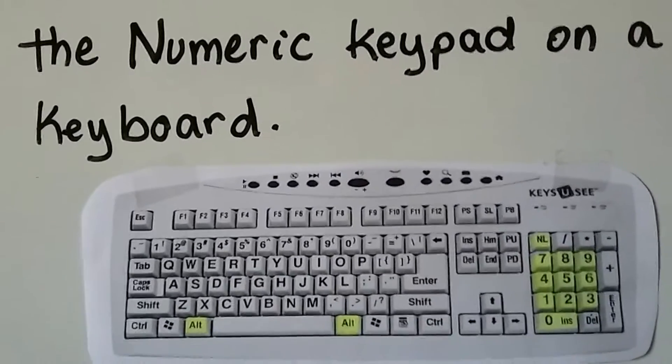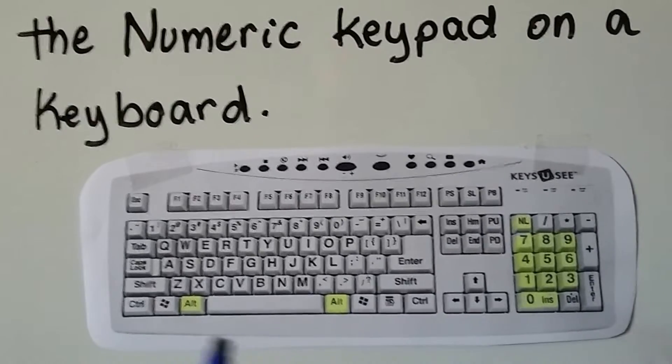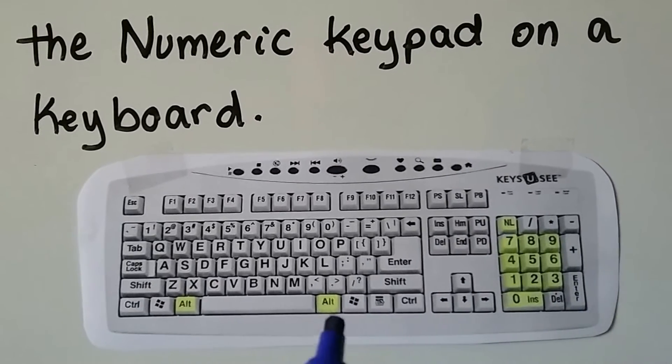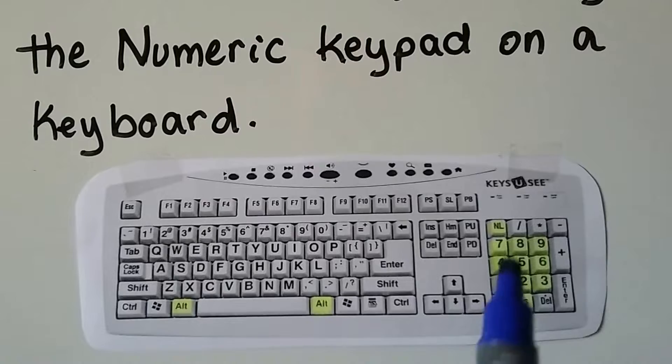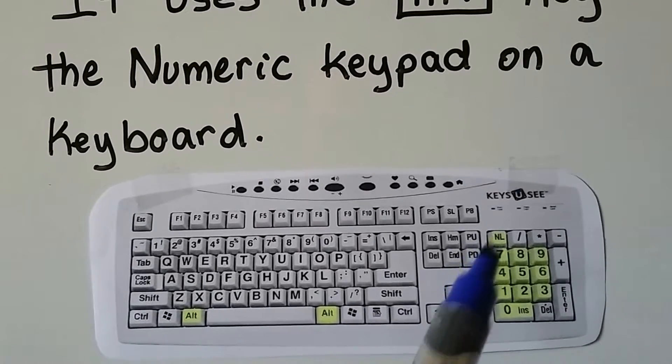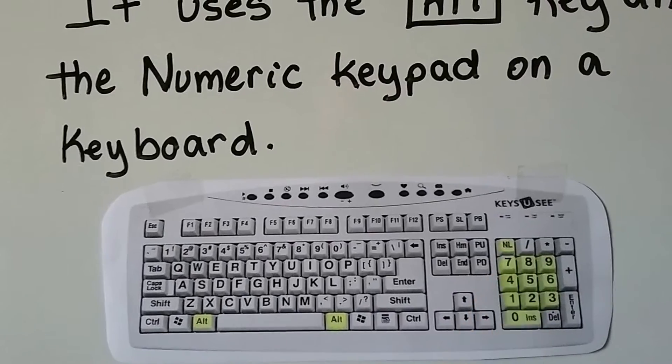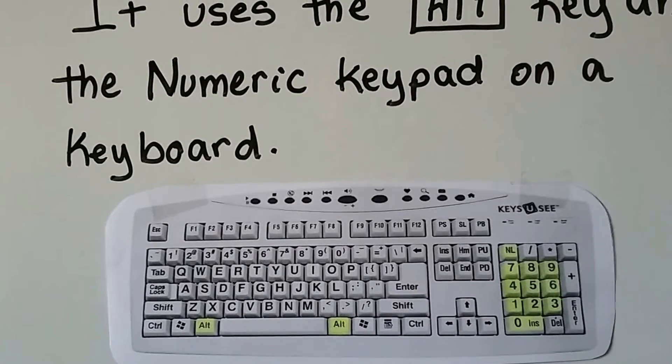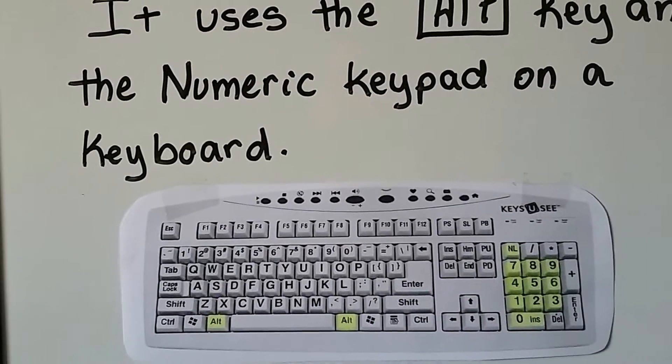You'll see on each side of the space bar there's an ALT key. And we use the numeric keypad. You have to make sure that numlock button up here is pushed. Usually a little light will go on to let you know it's engaged.